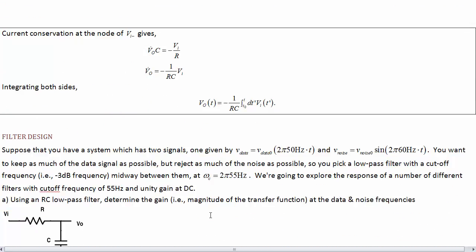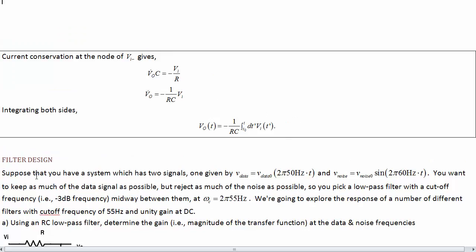Now let's get into some filter design. So suppose here we're going to do a bunch of different analyses. We're going to say we have a system that has two signals, a data signal at 50 Hz and a noise signal at 60 Hz. And we want to keep as much of this as possible and get rid of as much of this as possible. These are pretty close in frequency though, so we're going to have to be careful about what kind of filter we design. And we're probably going to need a pretty good filter to get rid of this while keeping this.